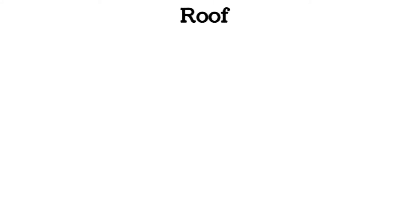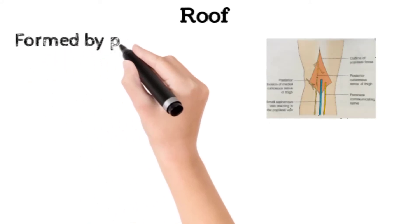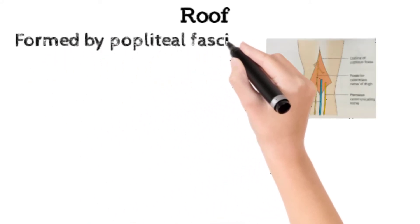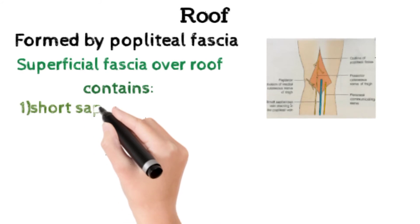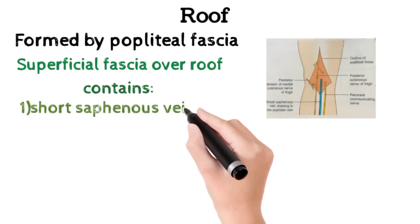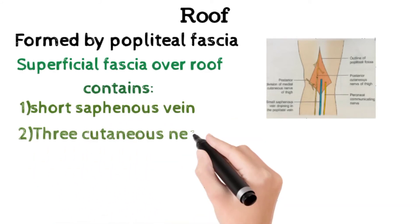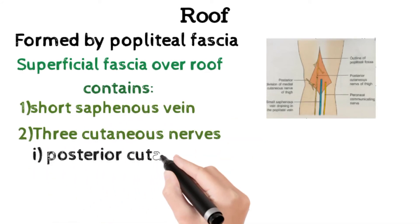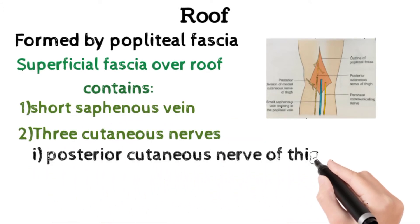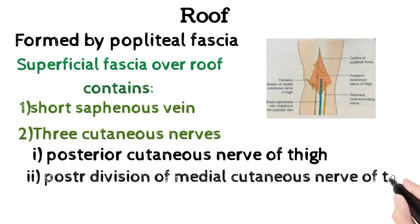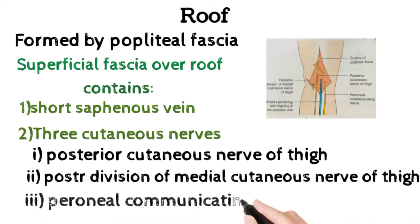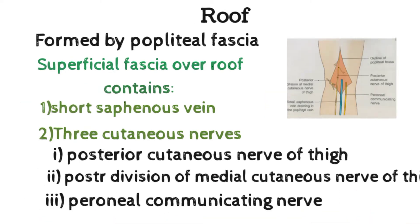Coming to the roof: the roof is mainly made up of the popliteal fascia and the superficial fascia. The superficial fascia covering the roof also contains the short saphenous vein and three cutaneous nerves, which are the posterior cutaneous nerve of the thigh, the posterior division of the peroneal cutaneous nerve, and the peroneal communicating nerve.